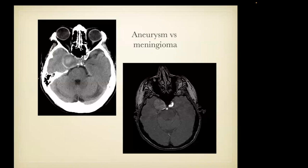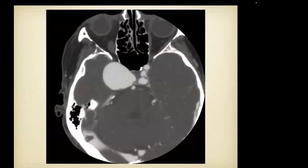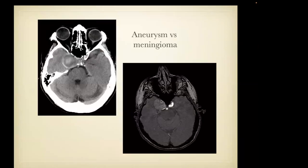Regarding insensitivity of 3D time of flight to slow flow: here is a patient with a mass in the parasellar region — could this be an aneurysm or a meningioma? On the 3D time of flight MRA source image, there is high signal in the carotid and basilar artery but very little signal arising from the parasellar mass. You might mistakenly conclude it's not a vascular structure — but the CTA of the same patient confirms this is a giant aneurysm. The lesion shows very different signal from the carotid because of slow flow inside the large aneurysm.